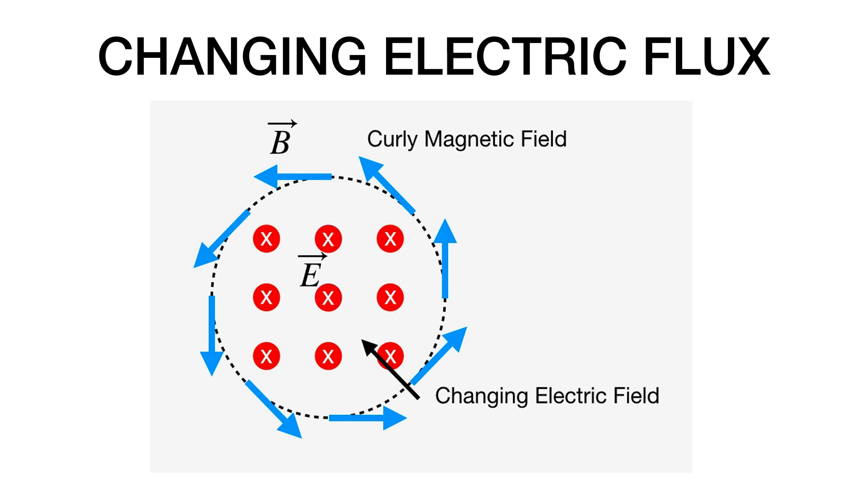You can also make a curly magnetic field with a changing electric field. So, this is just like Faraday's Law, except opposite. Right? Faraday's Law says, changing magnetic field makes a curly electric field. This says, a changing electric field makes a magnetic field. Boom. I mean, that's awesome.